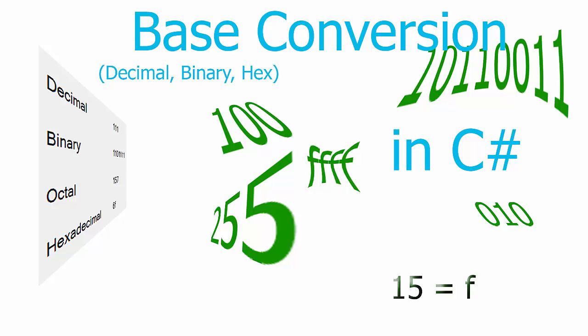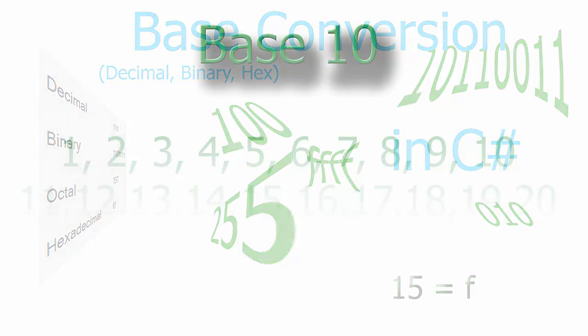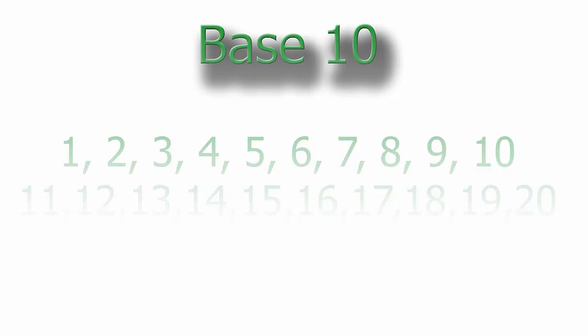Basically, number bases are just going to be what you count to, or what the maximum value of any single place in a number is. For example, what we're used to is going to be base 10 — it's what we normally count in. It's zero through nine or one through ten.